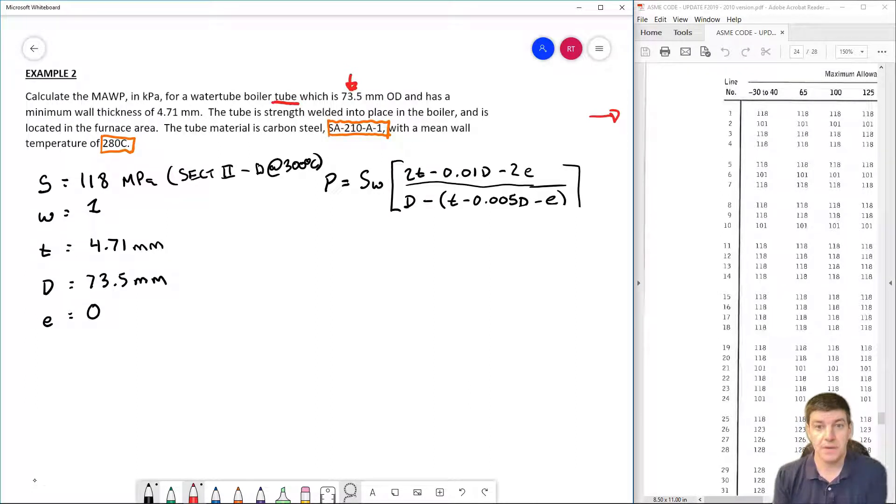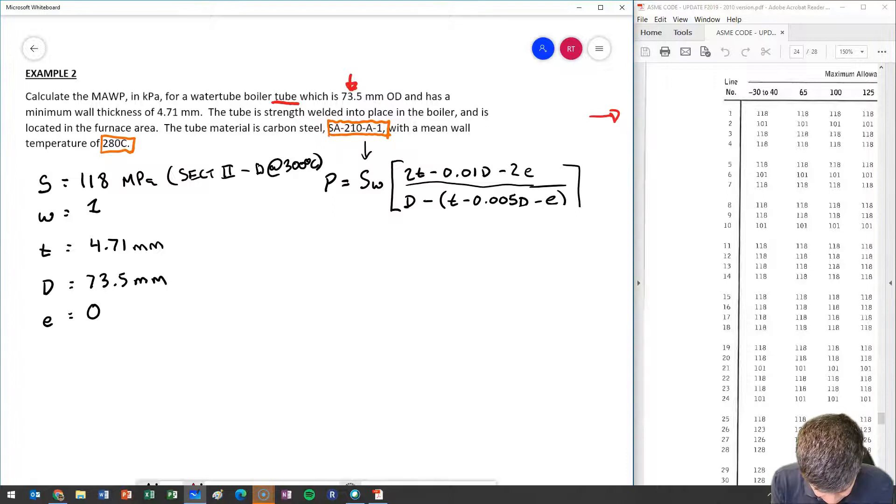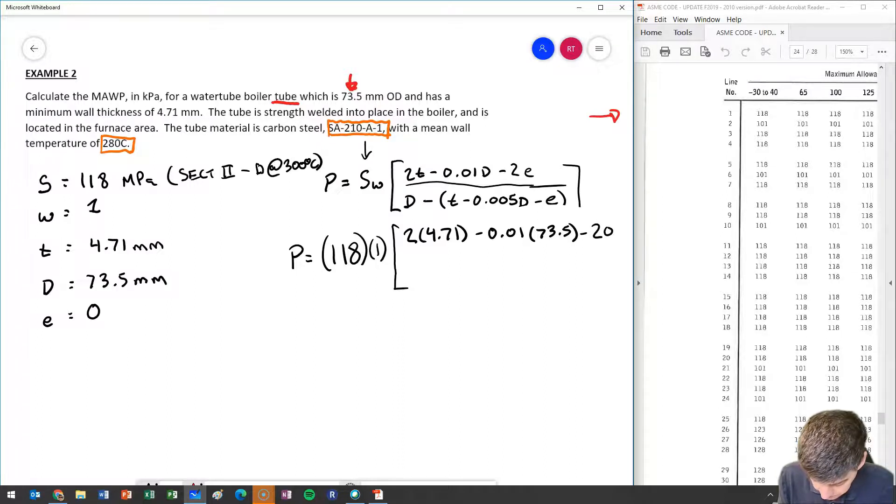Okay, so we have everything we need. Now we can throw in our numbers into our equation and do our calculation. One thing that we want to be careful of is that we don't forget to multiply everything by S at the end. So I often want to just make sure I really emphasize that. P equals 118 times my W value of 1, because sometimes we forget about it with all the square brackets and all the work that we have to do inside.